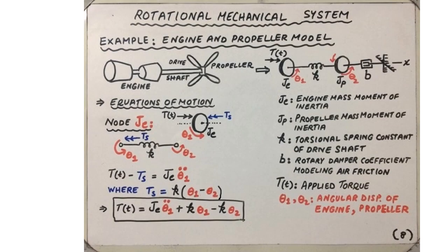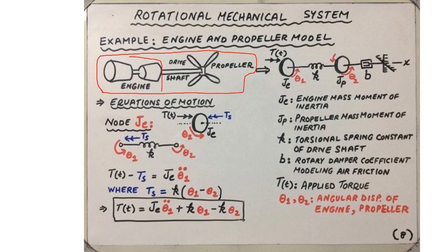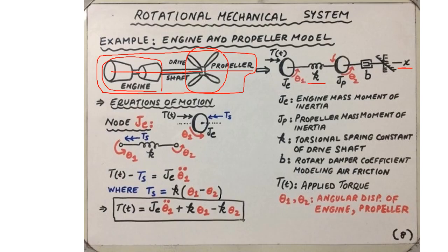Our first example is an engine driving a propeller. The engine is connected to a propeller by means of a long drive shaft, and the engine is modeled as a discrete inertia rotating about axis x. The drive shaft is modeled as a torsional spring with spring constant k, since the shaft is long enough to allow twisting without breaking. The propeller also rotates about the same axis.